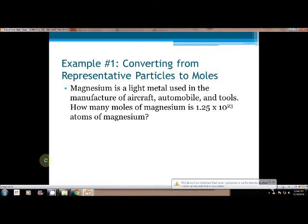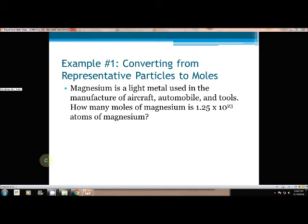So we're going to do Example 1 and 2, and then we're finished for the day. We have a worksheet to work on, and we're going to practice these two steps. We're dealing with the mole circle, the representative particle circle, and the ion circle on our mole map. For Example 1, magnesium is a light metal used in the manufacture of aircraft, automobiles, and tools. How many moles of magnesium is 1.25 times 10 to the 23rd atoms of magnesium.